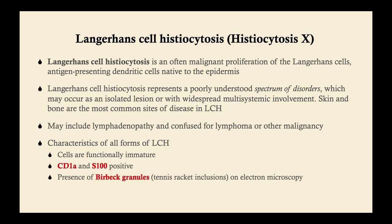Langerhans cell histiocytosis represents a poorly understood spectrum of disorders, and because it's poorly understood, it's less likely to be heavily tested on the USMLE. This can occur as an isolated lesion or with widespread multi-systemic involvement. The most common sites of disease are the skin and bone. It may include lymphadenopathy, which can cause confusion with lymphoma or other malignancy, and may prompt a lymph node biopsy.